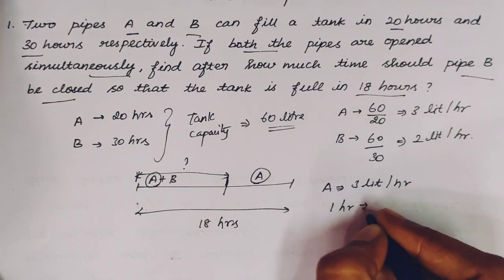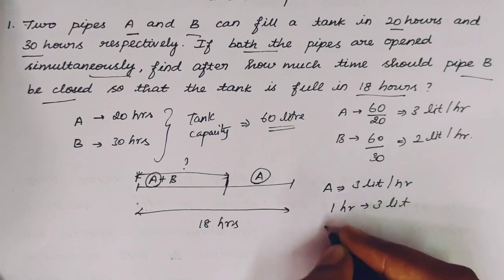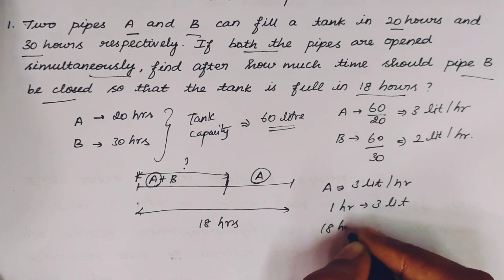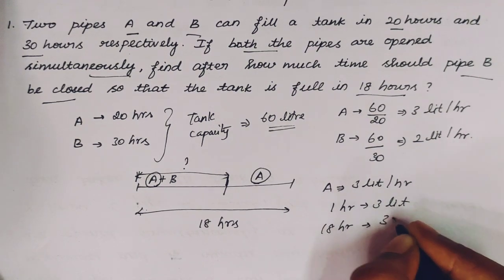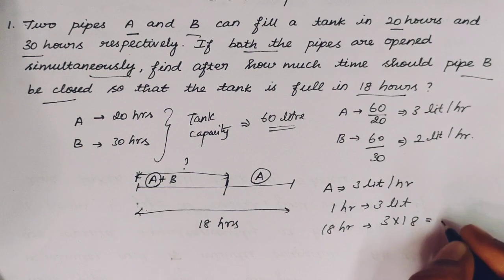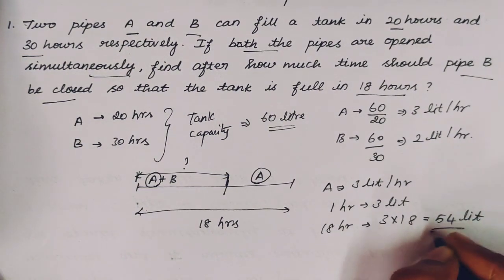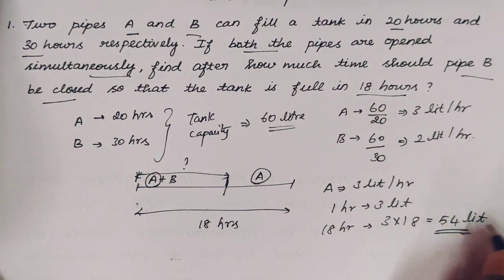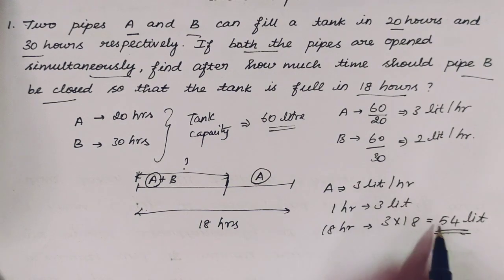Since pipe A runs for the entire 18 hours and fills 3 liters per hour, A fills 3 into 18 equals 54 liters total. The total tank capacity is 60 liters, so the remaining liters to be filled are 60 minus 54 equals 6 liters.